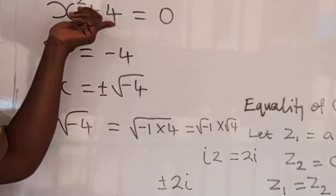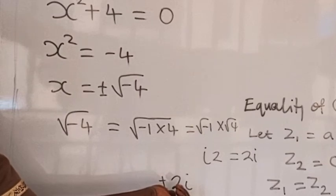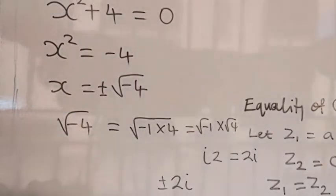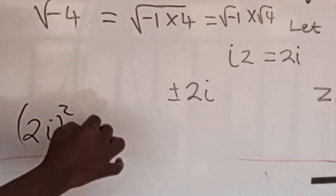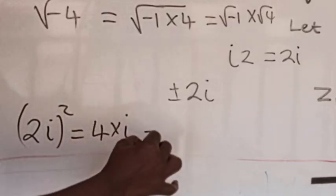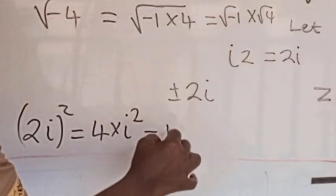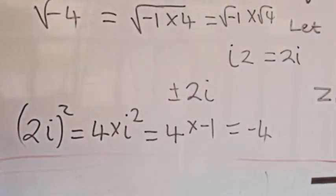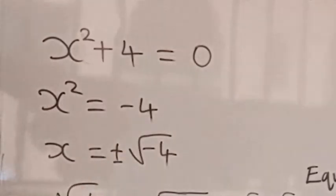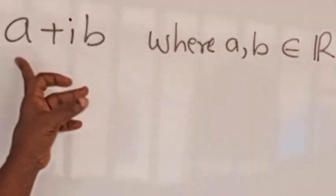This is a valid solution because if you square 2i you get minus four. Specifically, (2i) squared equals four times i squared, and i squared equals minus one, so four times minus one equals minus four. And minus four plus four equals zero, confirming the solution.